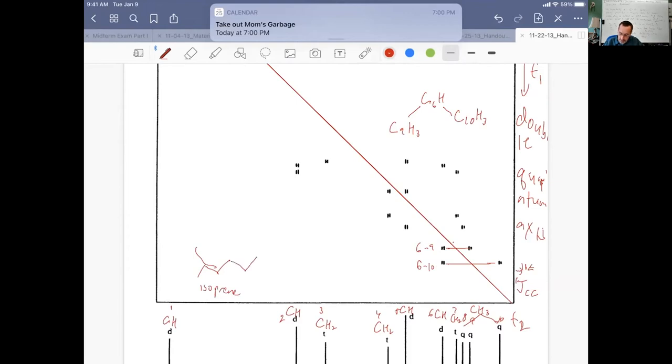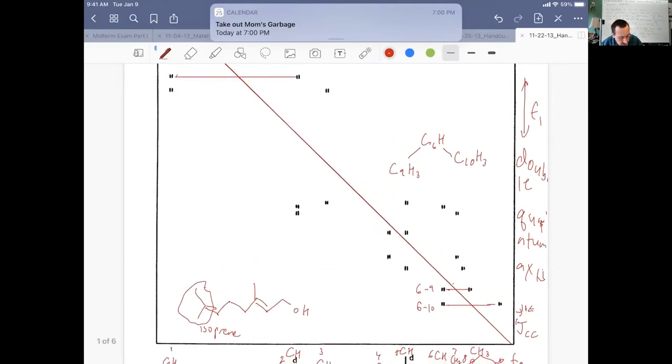This is an isoprene unit. A monoterpene is biosynthetically built up from two of these units. Often the precursor is an alcohol that undergoes a cation-pi cyclization, often as the pyrophosphate. These are darlings of NMR spectra. If you have three isoprene units you have a sesquiterpene. Sesqui means one and a half. If you have four isoprene units, so C20, you have a diterpene. We have a monoterpene here.